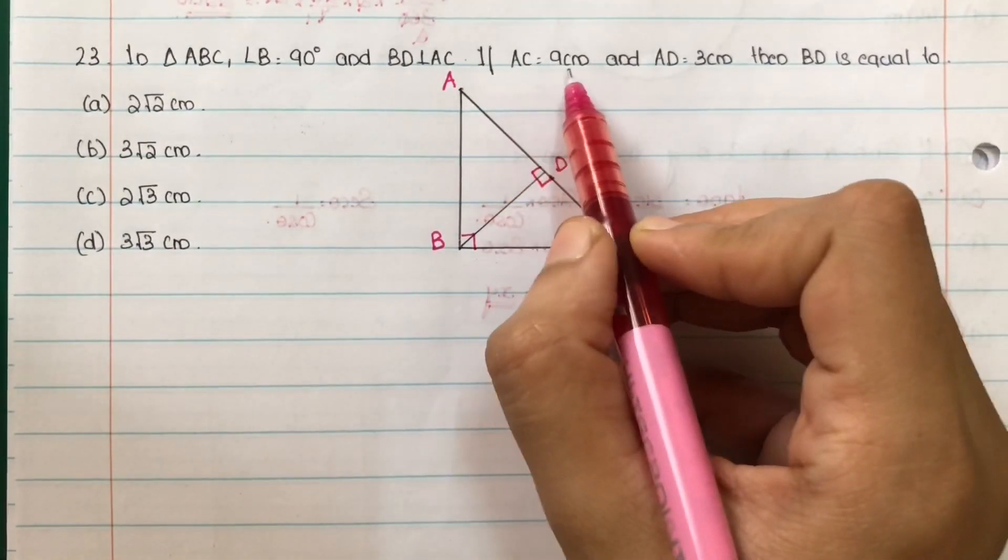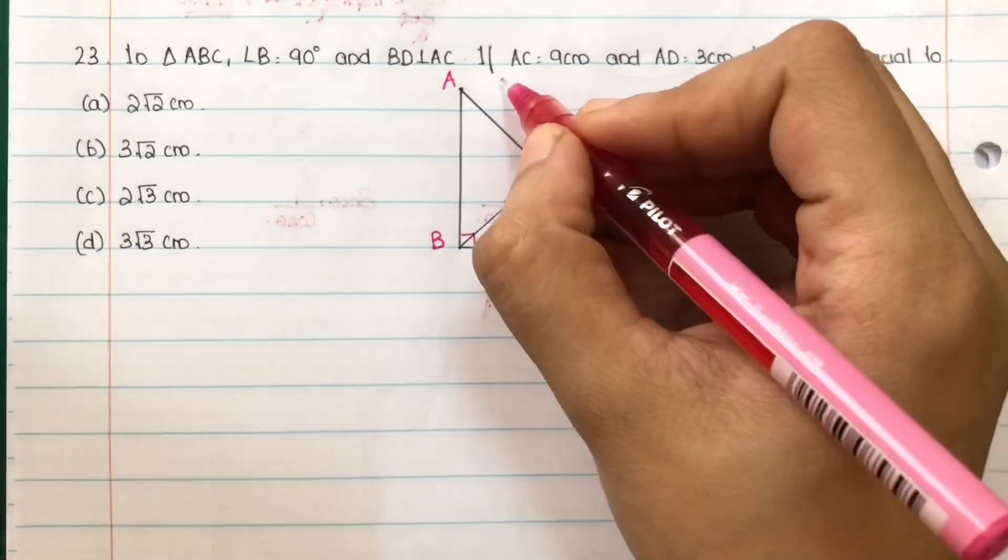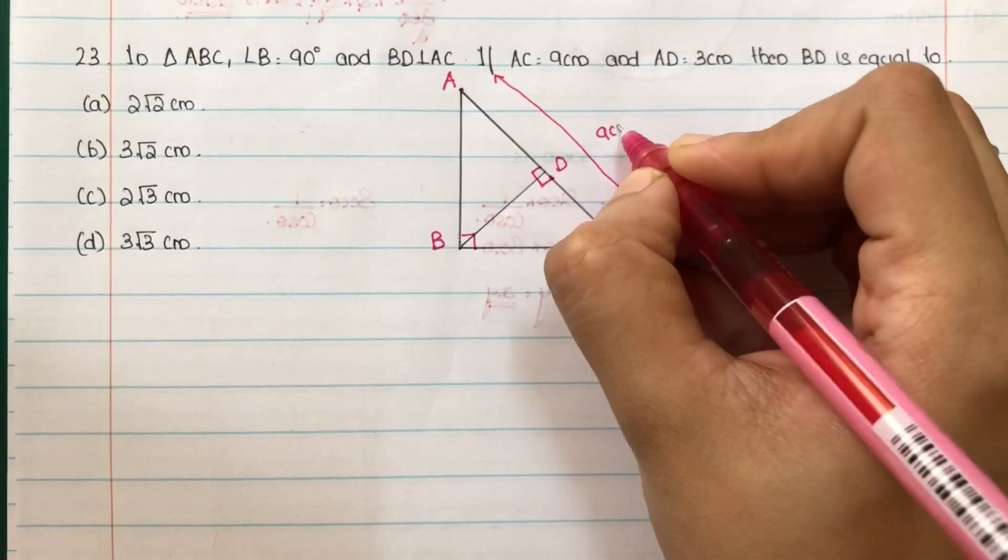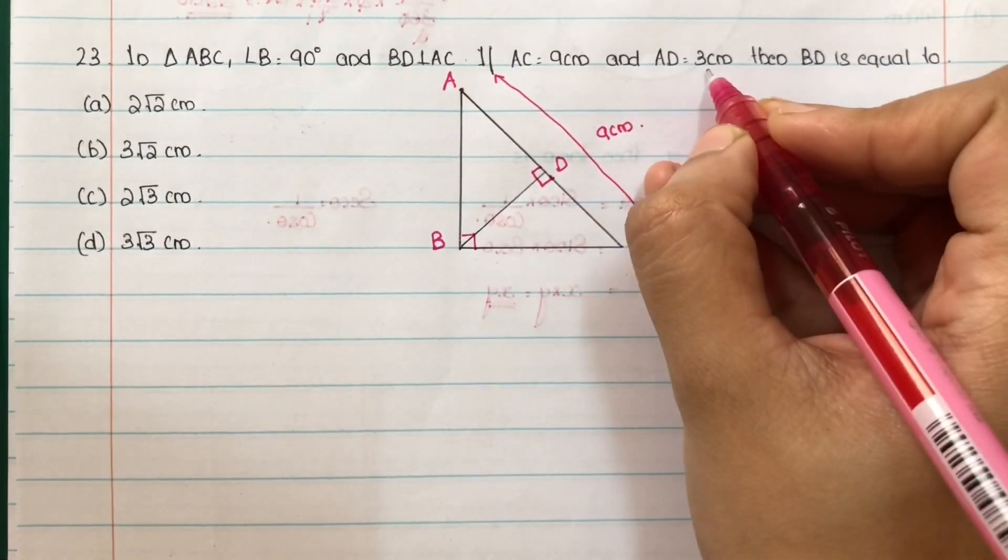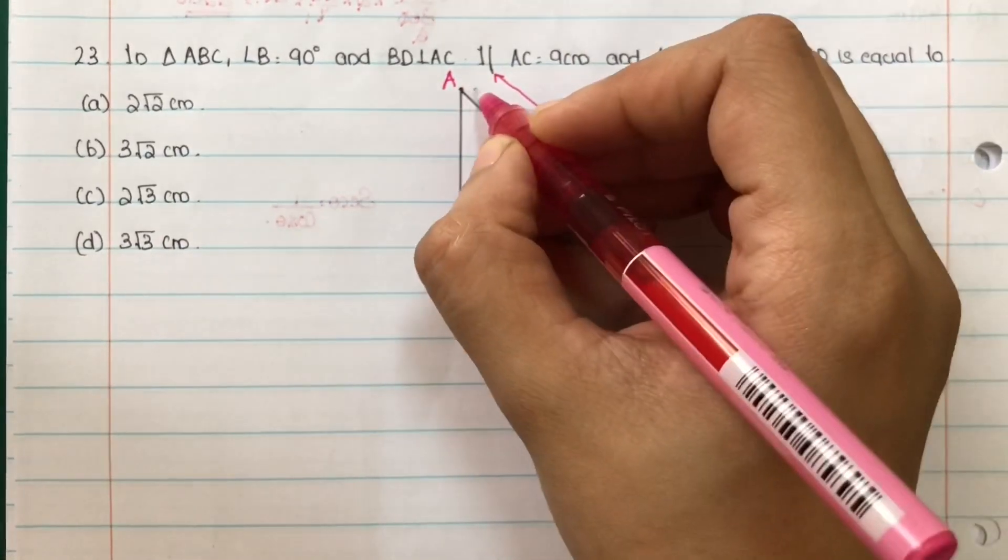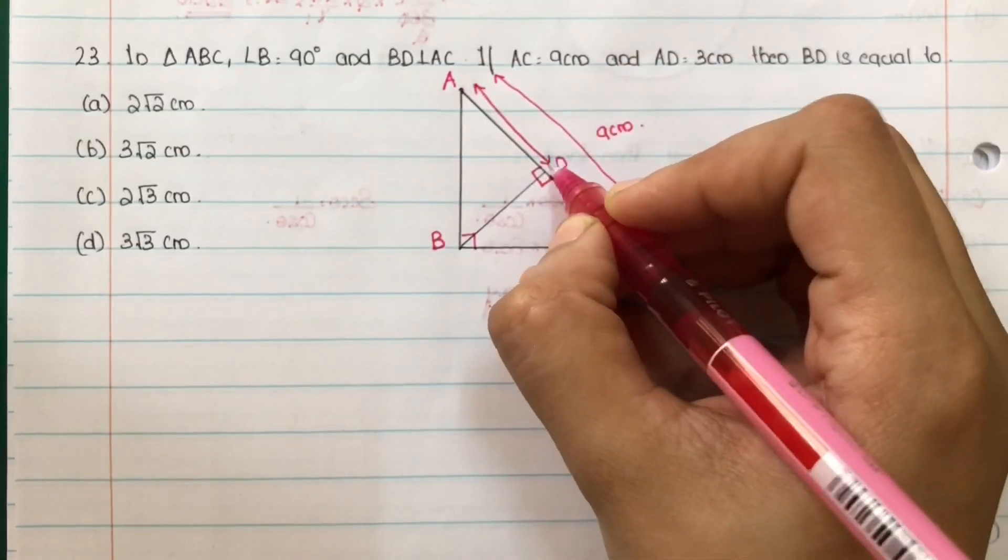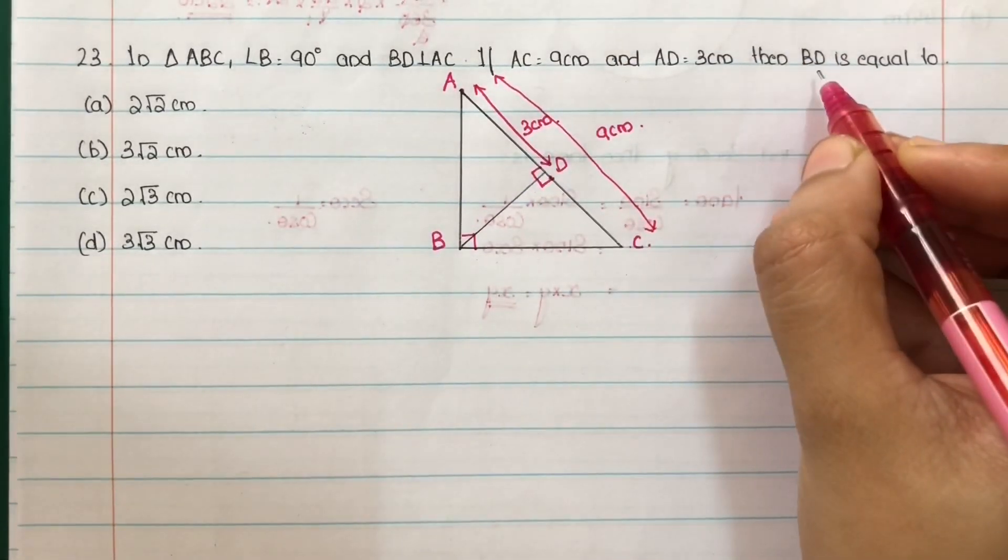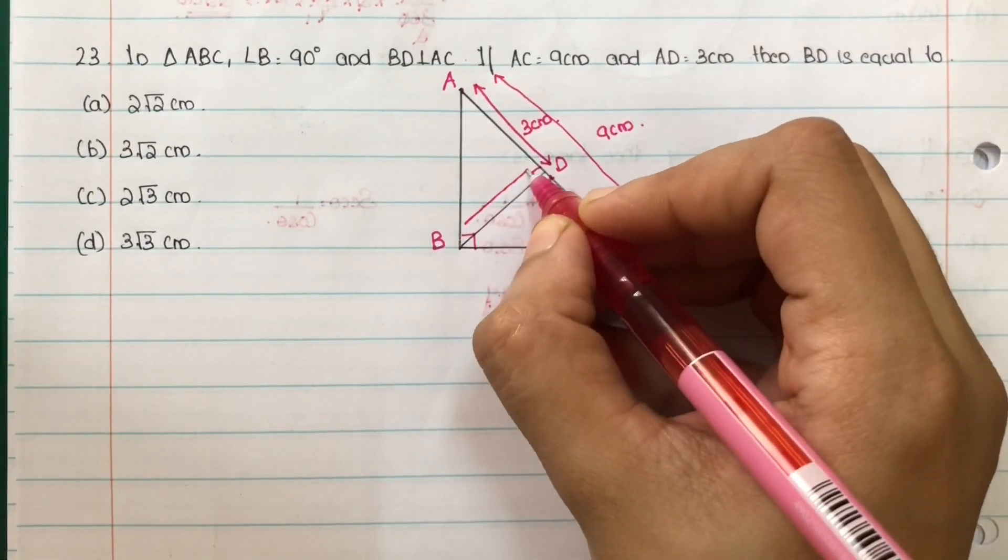If AC equal to 9 centimeters, AC. If full length equal to 9 centimeters and AD equal to 3 centimeters, AD equal to 3 centimeters. Then BD is equal to, this length is equal to find out.